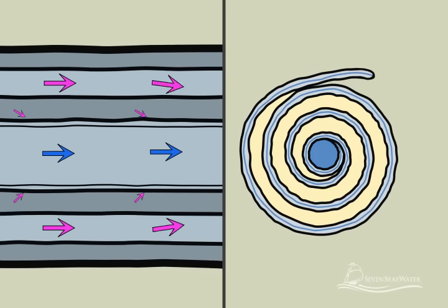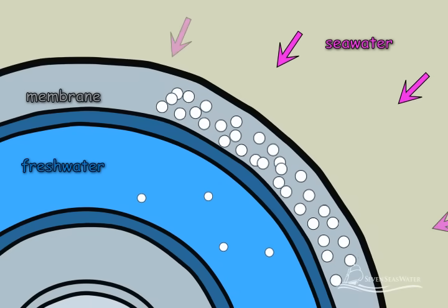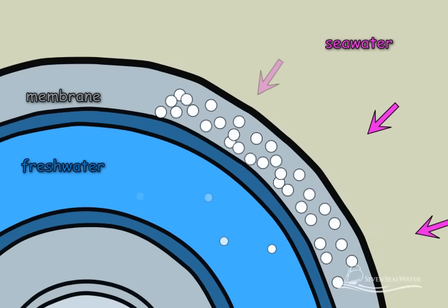The salt particles in the seawater are rejected from passing through the membrane to the freshwater side and remain behind on the concentrated saltwater side.